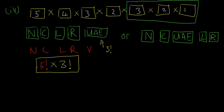Putting that into the calculator, five factorial times three factorial gives us 720 different ways of arranging the letters with all three vowels together.